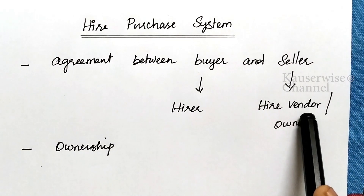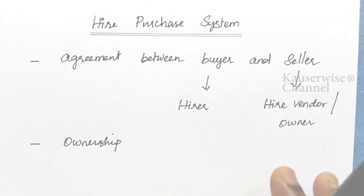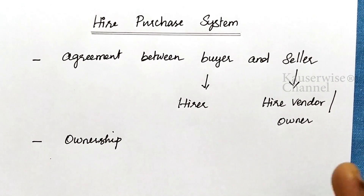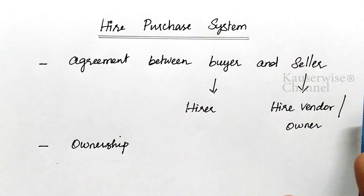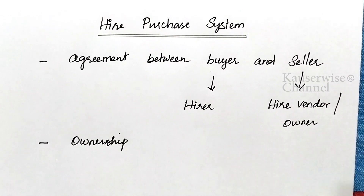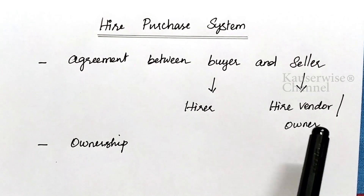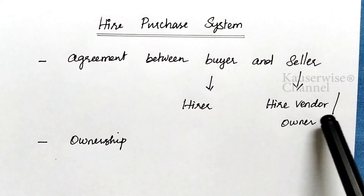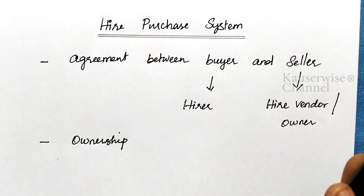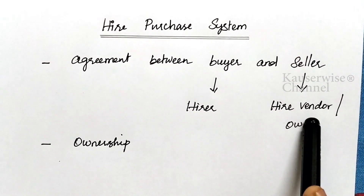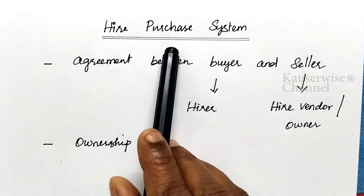According to this agreement, the buyer will get ownership only after making the last payment — after clearing all the due amount to the seller, then only the ownership will be transferred from seller to buyer. Till such time, the seller will have the ownership. If the buyer fails to pay any installment amount, the seller has every right to get back the goods from the buyer, because ownership remains with the seller. After making the last installment only, the seller will transfer the ownership to the buyer. This is called the Hire Purchase System.